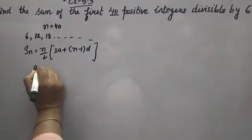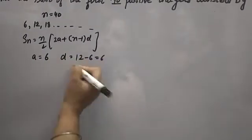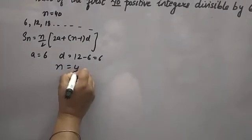In this case, a is 6, d is 12 minus 6, that is 6. Or 18 minus 12, which is also 6. N equals 40.